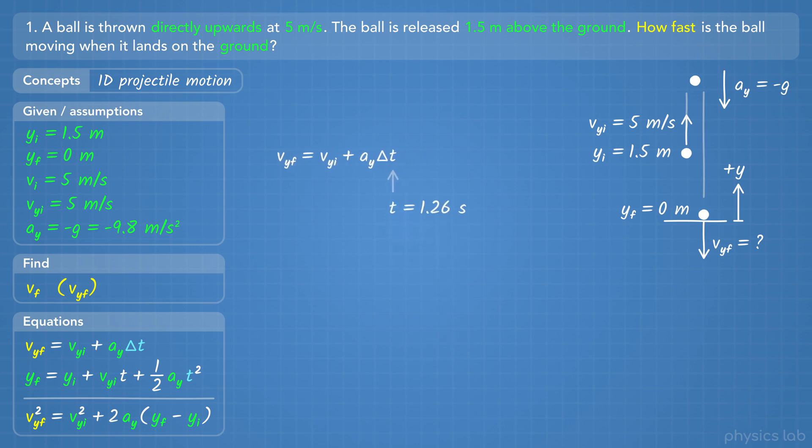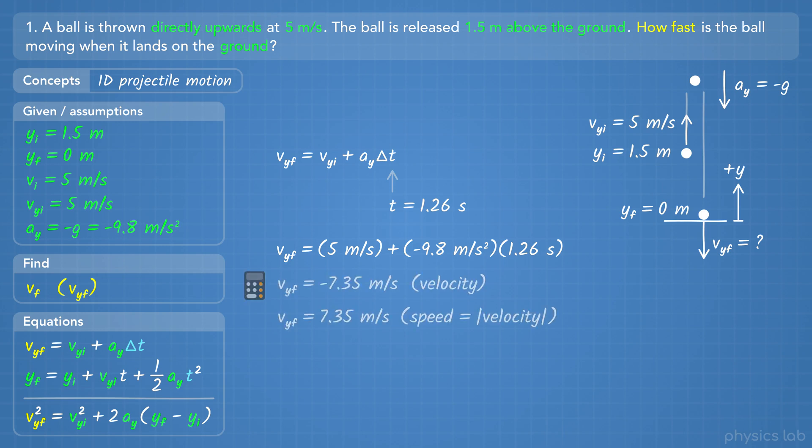Now we can plug this value into the other equation to find the final velocity. The initial velocity is 5 meters per second, the acceleration is negative 9.8 meters per second squared, and the time is 1.26 seconds. That gives us negative 7.35 meters per second for the final velocity.